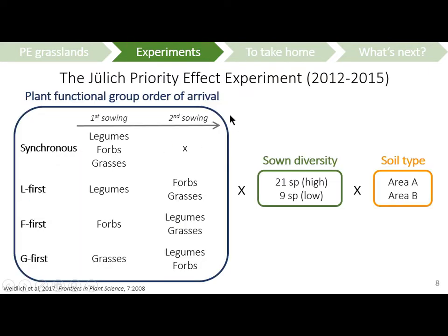This experiment had the following design. We had three experimental treatments. The first treatment was plant functional group order of arrival, with four different possibilities: either all functional groups arrived at the same time as a control, or one functional group arrived five weeks before the others — for example, legume-first plots, forb-first plots, or grasses-first plots. This order-of-arrival treatment was crossed with a species richness treatment with high and low diversity plots. These combinations were replicated in two different soil types: area A and area B, with area B being more nutrient-rich.